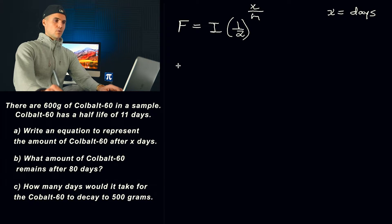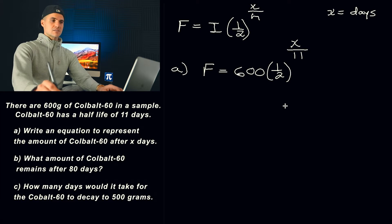Now we are given the initial amount - we start with 600 grams. We got a half right here. And then x, the number of days, is going to be the variable. And then the half-life is given as 11 days. So that's going to be the general function that we're going to be dealing with for the rest of the question in parts B and C.